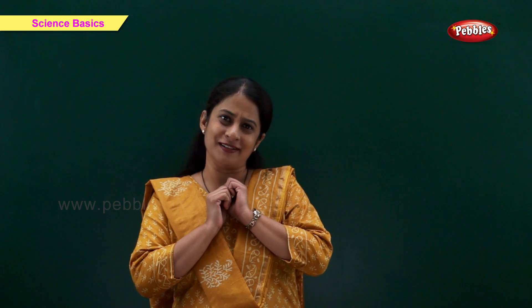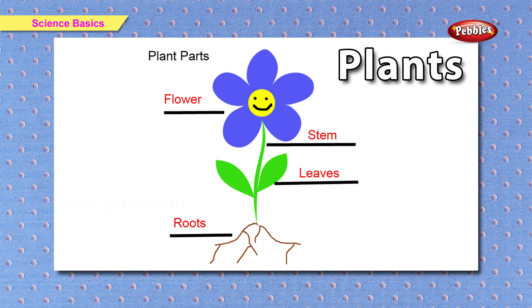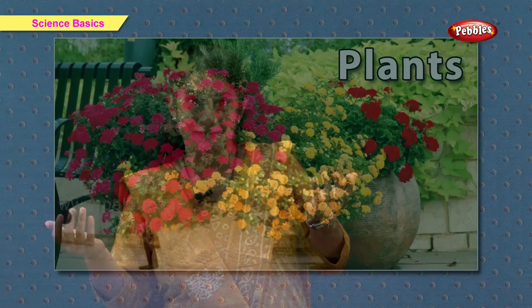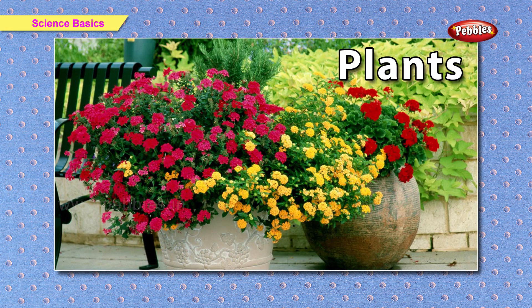What are plants? Plants are living things. They share some common properties with all other living things. Most plants are green. Plants have roots, stems, leaves, and flowers. Some plants also have fruits.